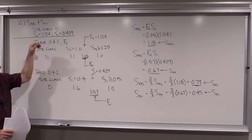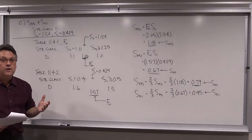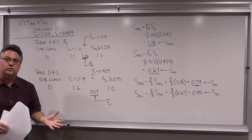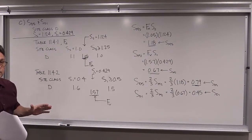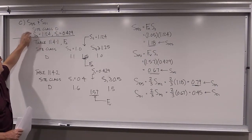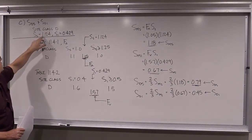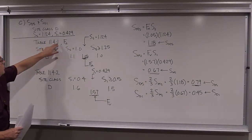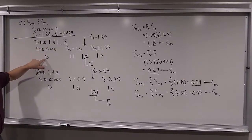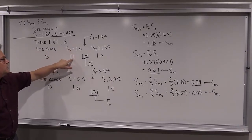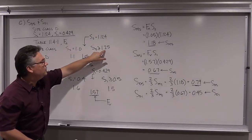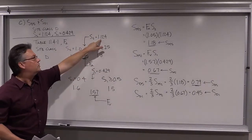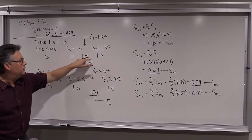Part C: calculate SDS and SD1 values. Even though the USGS will print those for you, there are times when those printed values will be higher — conservative — and you may be able to use lower values, so I want you calculating these things. For site class D, the geotechnical report gives SS of 1.124 and S1 of 0.429. From table 11.4-1 for site class D: at SS = 1.0 the F_A factor is 1.1, and at SS ≥ 1.25 F_A is 1.0. We interpolate for our SS of 1.124 and get an interpolated F_A value of 1.05.